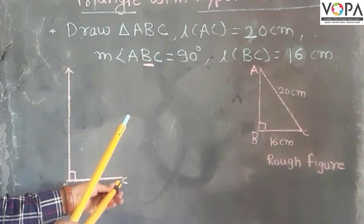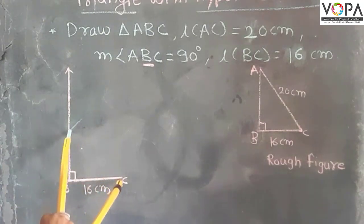So put this needle point on the vertex C and make an arc on the angle side of B.